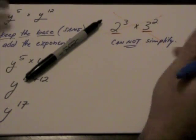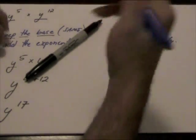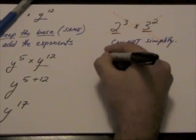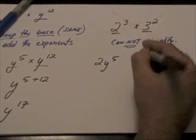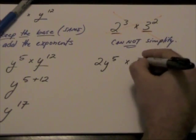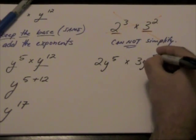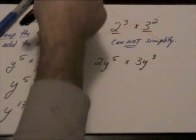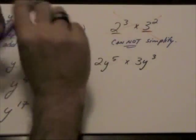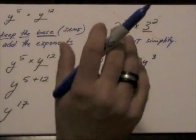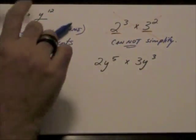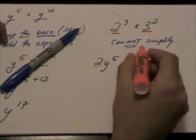Let's do another example: 2y to the power of 5 multiplied by 3y to the power of 3. When we are multiplying powers with the same base, we're going to keep the base. But when we have this, what we're looking at, don't worry about the numbers.